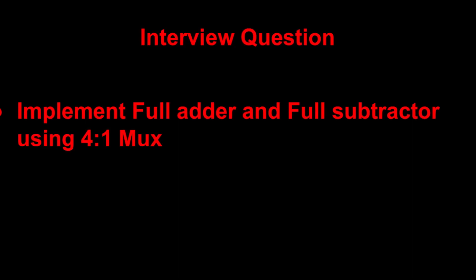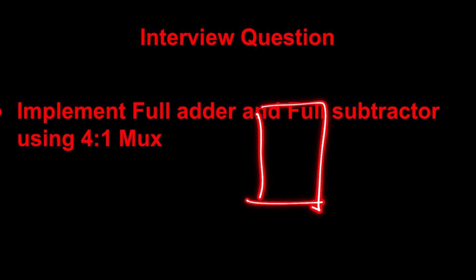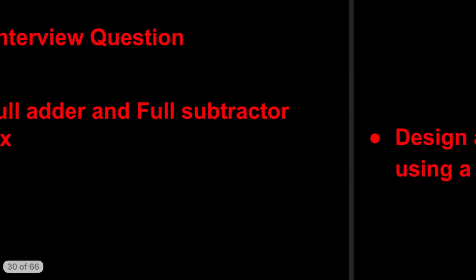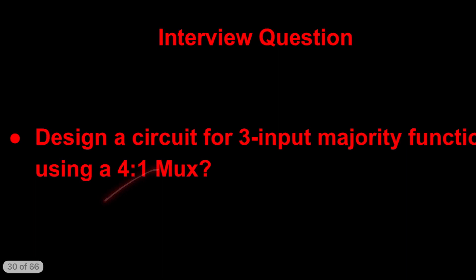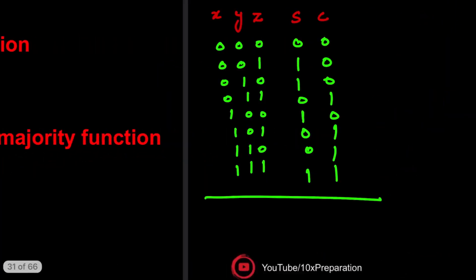In this video we are going to determine the full adder and full subtractor by making use of a 4x1 MUX. The idea is to reduce the size of the MUX by one variable — instead of three select lines you will have only two inputs, and one variable will be used at the input end. We also need to find the majority gate function.